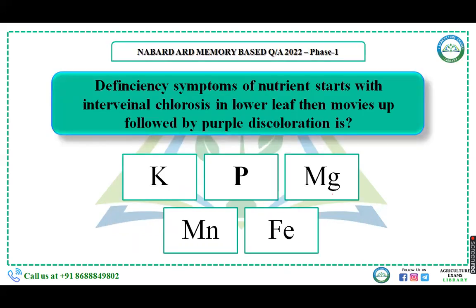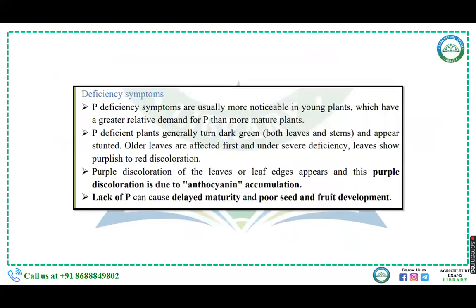The deficiency symptom of which nutrient starts with interveinal process in the lower leaf, moving upward, with purple discoloration in the class? The right answer is phosphorus. Purple discoloration of the leaves appears due to anthocyanin accumulation, which indicates phosphorus deficiency.